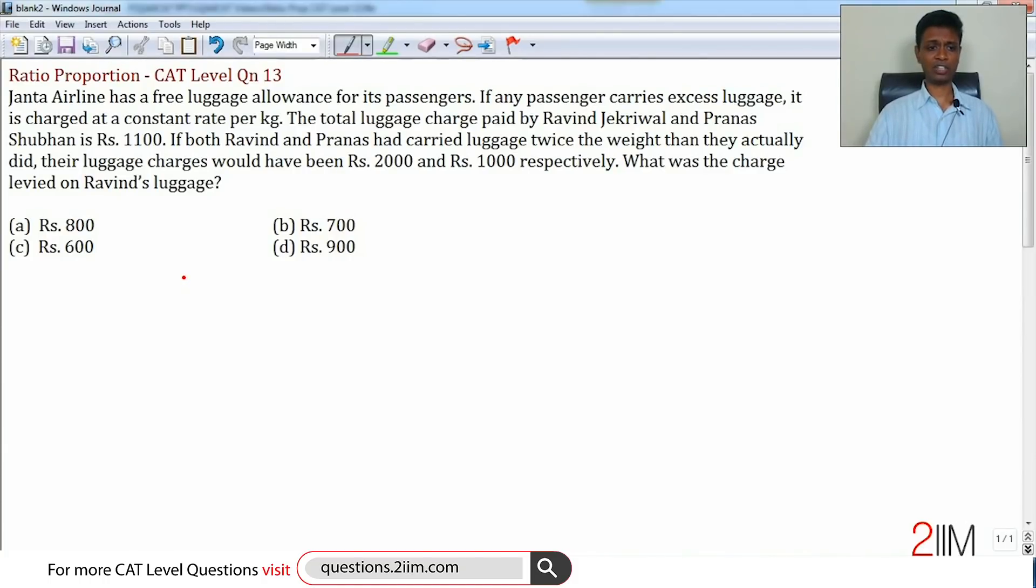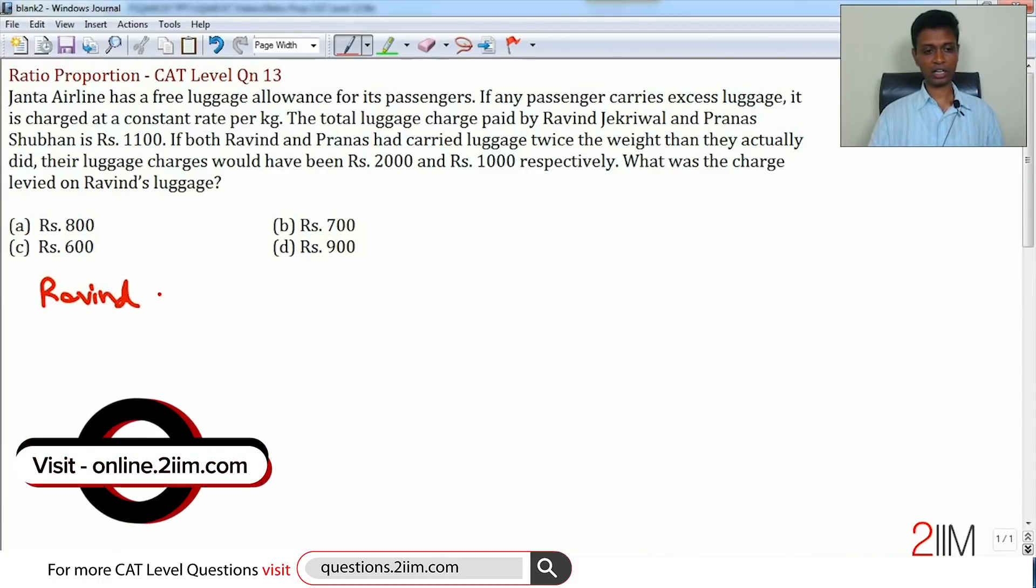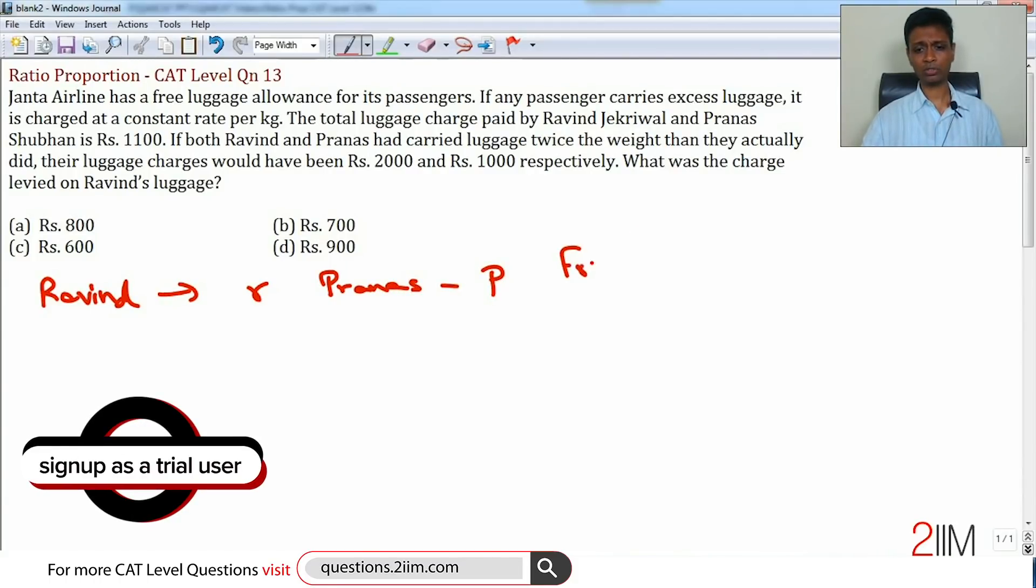To start with, let's say Ravind carried luggage of r and Pranas carried luggage of p. Further, let's assume that free luggage allowed per person is f.